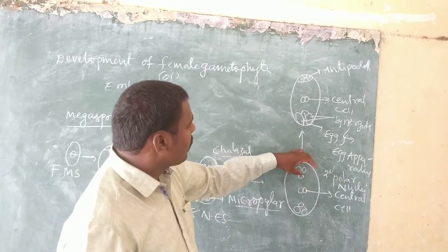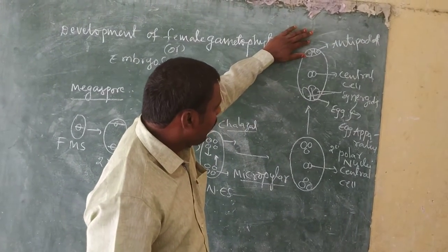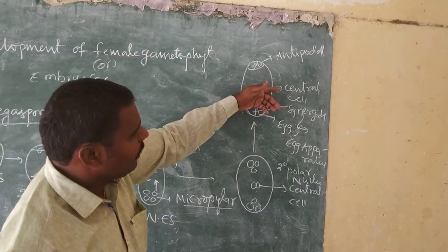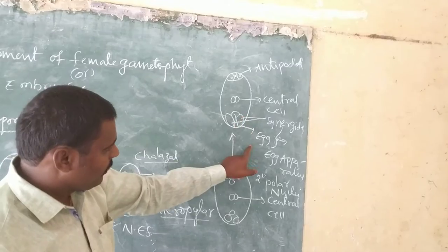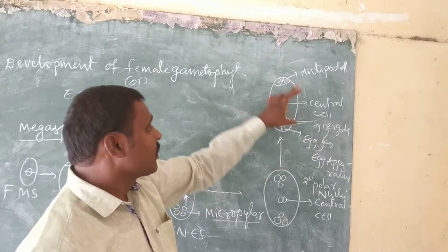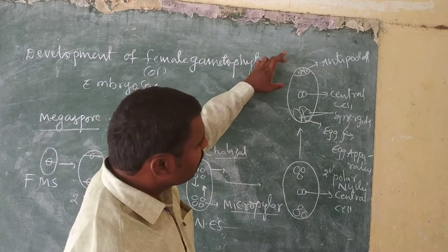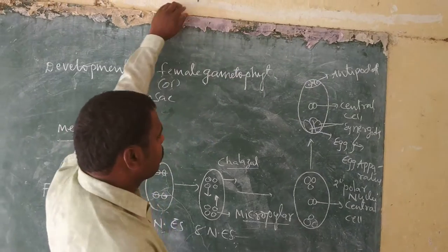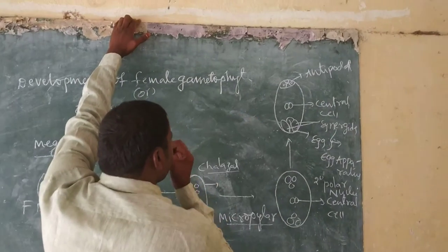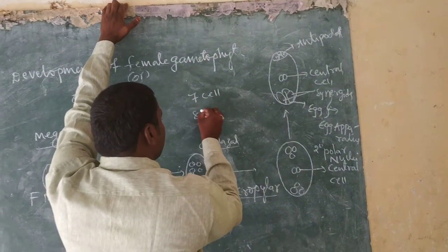The nuclei at the chalazal end develop into antipodals, and the nuclei at the micropylar end develop into the egg apparatus, which consists of two synergids and one egg cell, plus the central cell. In the majority of angiosperms, the mature embryo sac contains seven cells and eight nuclei.